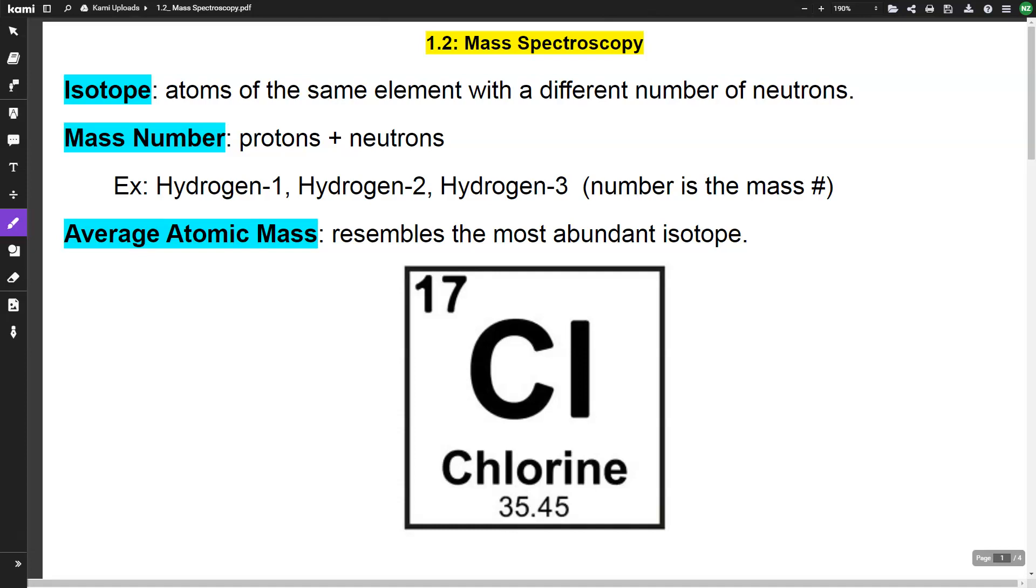So here are three examples: hydrogen-1, hydrogen-2, and hydrogen-3. All of these are hydrogen, so they're all going to have one proton.